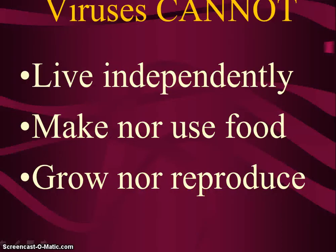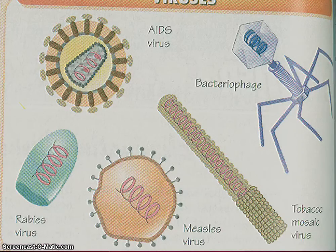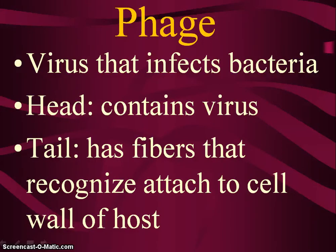There are some things viruses cannot do: they cannot live independently, cannot make or use food, and don't grow or reproduce on their own. They are kind of like parasites — they require the host to perform virtually all biological functions that lead to production of new viruses. They use the energy and protein-producing machinery of the host cell to make new virus particles and are incapable of independent metabolism.